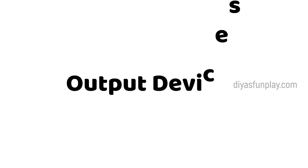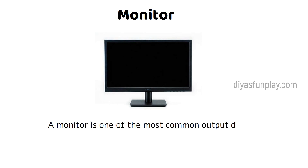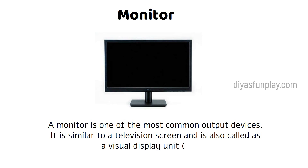Now, let's see the most common output devices. Monitor. A monitor is one of the most common output devices. It is similar to a television screen and is also called a visual display unit.